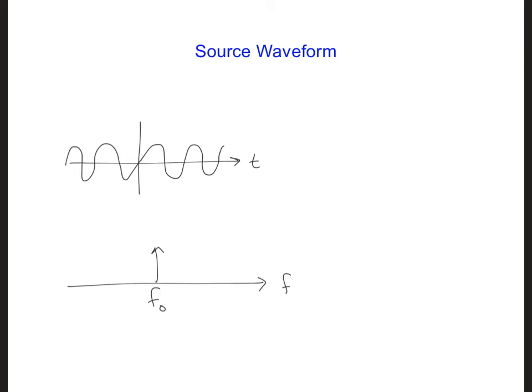For our scenario of interest, we probably want to have a fairly narrow pulse in time, so that we can separate out individual reflections caused by different objects. But as we saw on the last slide, a narrow pulse in time requires a lot of different frequencies. It has a broad spectrum.